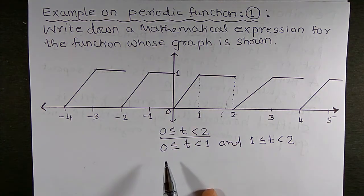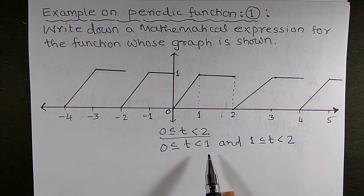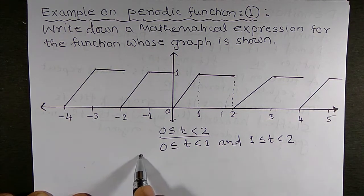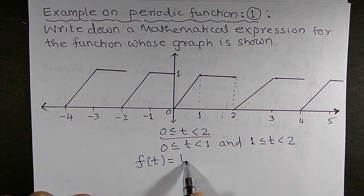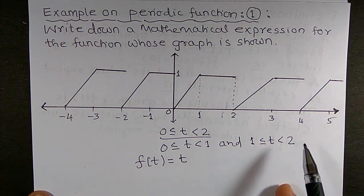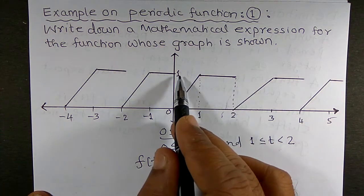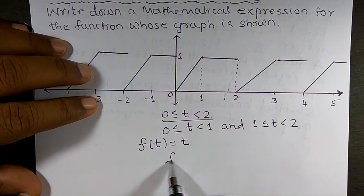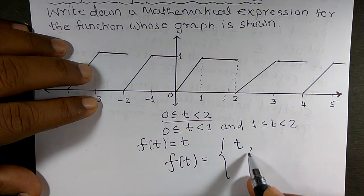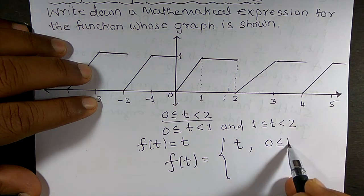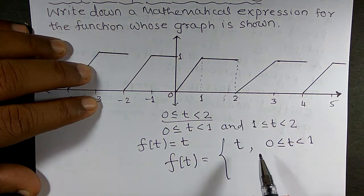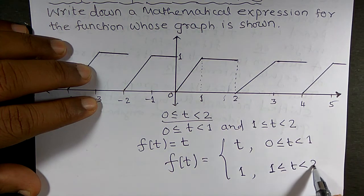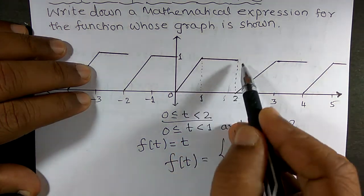For 0 ≤ t < 1, the function is a ramp with slope 1 passing through the origin, so its equation is f(t) = t. For the interval 1 ≤ t < 2, the function remains constant at 1. So the entire periodic function can be described as: f(t) = t for 0 ≤ t < 1, and f(t) = 1 for 1 ≤ t < 2. This function describes this part of the graph.